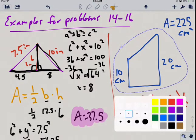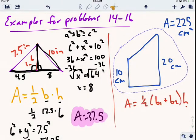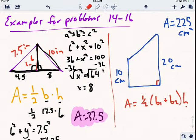The bases are 10 and 20. The area, which they gave us, is 225. So we have 225 equals one-half times 10 plus 20 times the height.